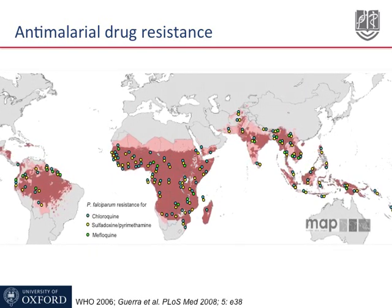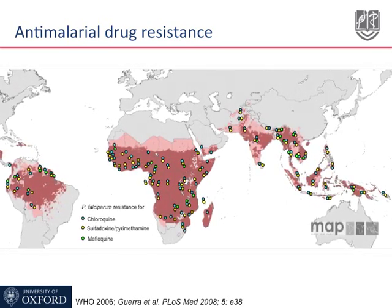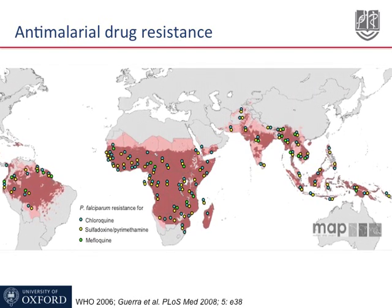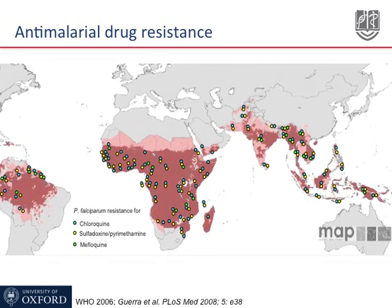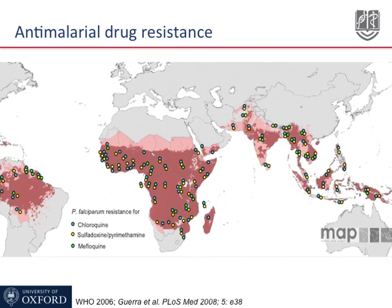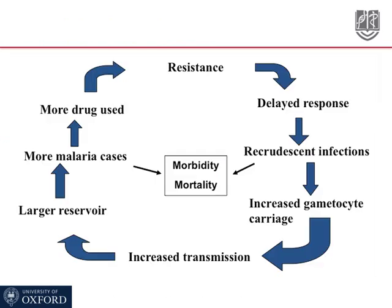This approach of early detection and treatment with an ACT for uncomplicated P. falciparum infections is designed to combat the spread of anti-malarial drug resistance. The slide shows the extent of resistance to chloroquine and to sulfadoxine-pyrimethamine in the tropics, and the vicious circle induced by resistance in the malaria parasite to anti-malarial drugs, resulting in higher morbidity and mortality in communities. Early detection and treatment with artemisinin combination therapy is aimed at breaking this vicious circle.